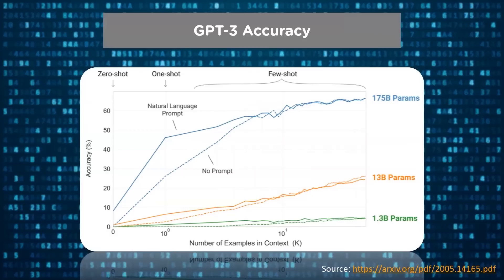In one-shot, the model sees a single example of the task along with the task description. In few-shot, along with the task description, the model sees a few examples of the task. Larger models make increasingly efficient use of in-context information.